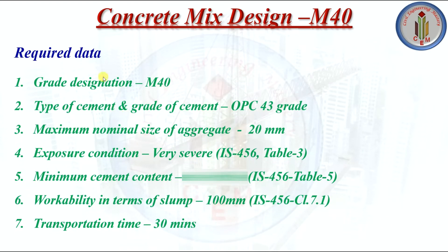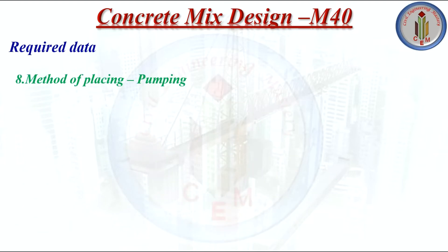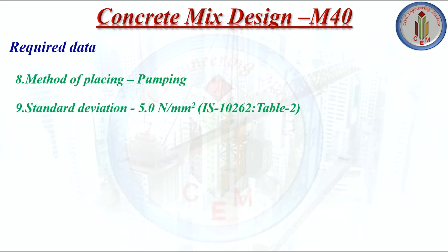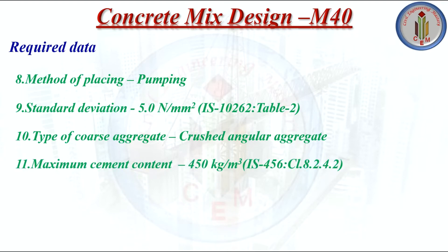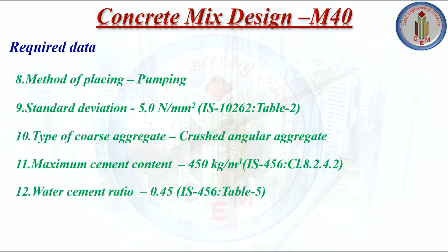Grade designation is M40. Type and grade of cement is OPC 43 grade (Ordinary Portland Cement). Maximum nominal size of aggregate is 20mm. Exposure condition is Very Severe as per IS 456 Table 3. Minimum cement content is 340 kg/m³. Workability in terms of slump is 100mm. Transportation time is 30 minutes. Method of placing concrete is pumping. Standard deviation is 5 N/mm². Type of coarse aggregate is crushed angular aggregate. Maximum cement content is 450 kg/m³ as per IS 456 clause 8.2.4.2. Water cement ratio is 0.45 as per IS 456 Table 5. Fine aggregate is Zone 2.